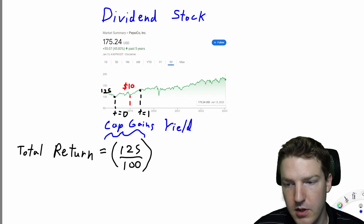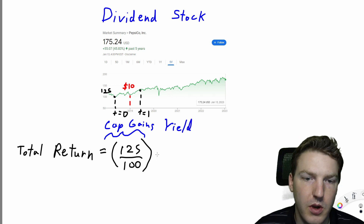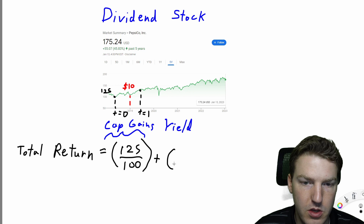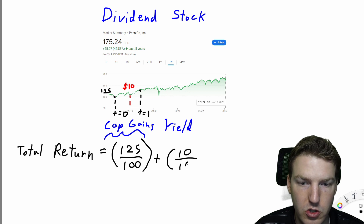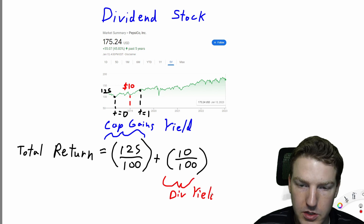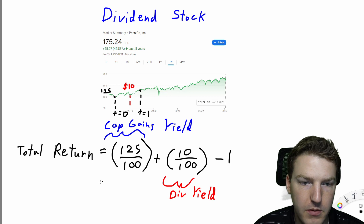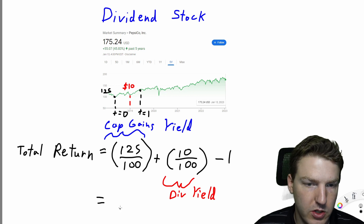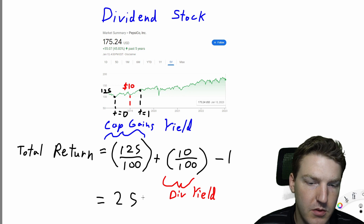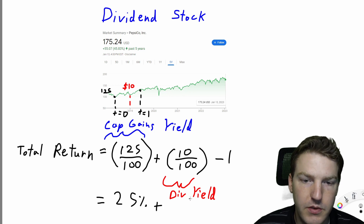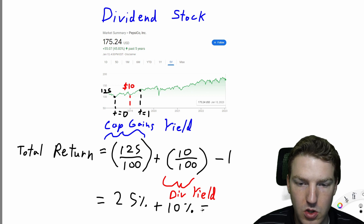Now there's another component with the dividend. We're actually going to have a whole other yield included, which is the dividend divided by the initial purchase price of $100. Then we subtract by 1. So our capital gains yield would have been 25%, and our dividend yield is going to have been 10%, making a total return of 35%.